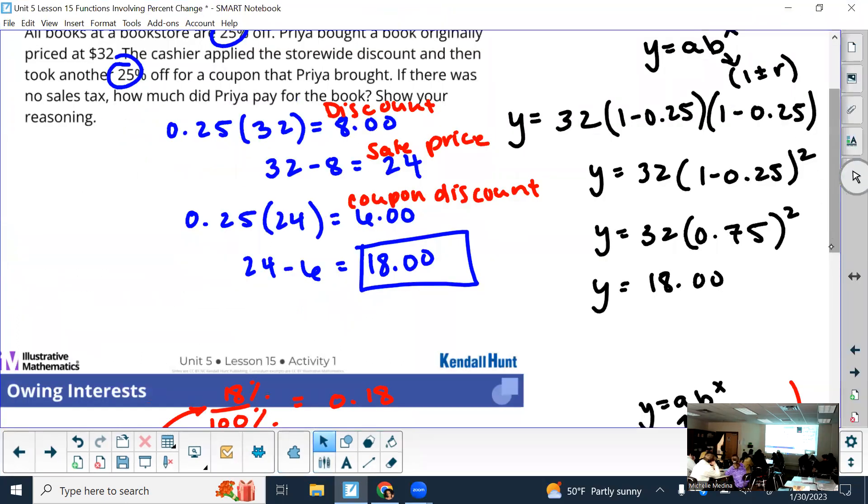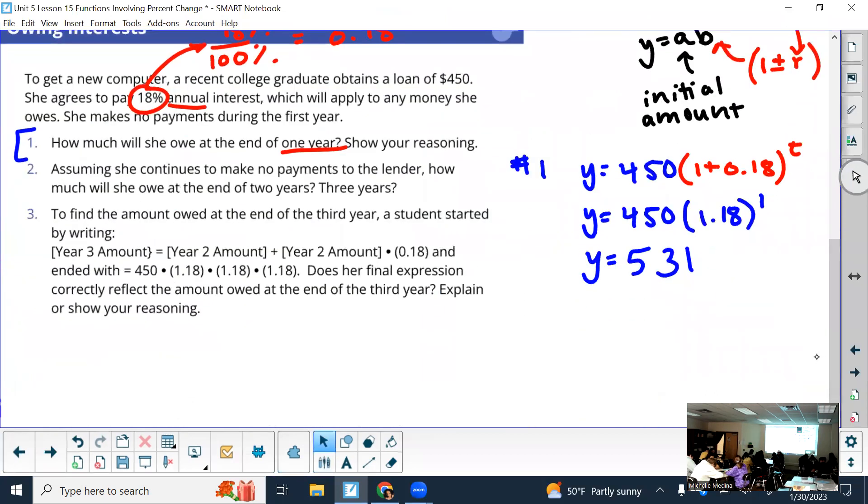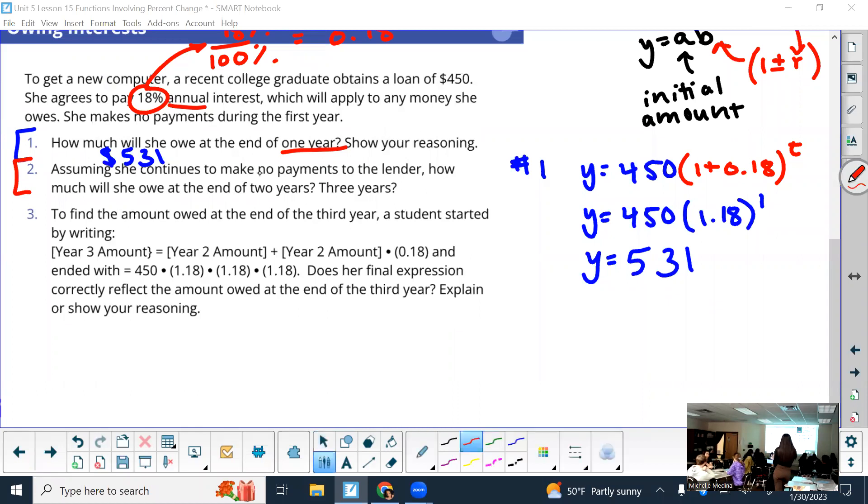All right. You guys will answer number two now. That says, assuming she makes no payments to the lender, how much will she owe at the end of two years and then three years? So, now that I've shown you one, you try it. Table. Okay. What does this person owe at the end of two years? All right. Check what I wrote. Is that what you said? Okay. Great. Well, actually, I don't know if that's right or not. So, we'll do that again. Okay. Well, three. What is it at the end of three years? Okay. All right. So, we'll see if they're right in a second.